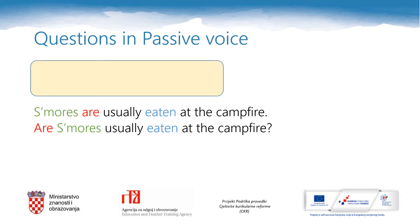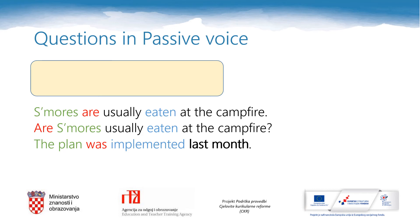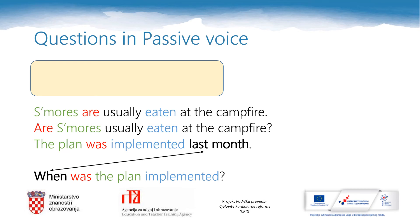Have a look at the sentence: The plan was implemented last month. If we want to ask a question about when something happened, we need a WH question word — in this case, when. We simply insert the question word before the form of the verb to be: When was the plan implemented? So there is a question word first, then the form of the verb to be, and the past participle.